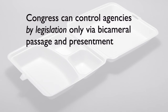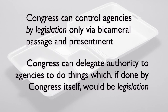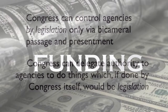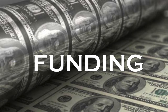The takeaway is that Congress can control agencies by legislation only through bicameral passage and presentment — while, of course, Congress can still delegate authority to agents to do things which, if done by Congress itself, would be legislation. There are other legislative controls. Each year, Congress has to pass omnibus spending bills to fund the entire federal establishment, and Congress can attach riders that defund certain agency actions, such as enforcement of regulations Congress would veto if it could. But courts will not readily imply a repeal or amendment from a failure to fund — repeals by implication are disfavored. This means that an agency paralyzed under an outgoing administration will still be there for an incoming administration to resuscitate if it wishes.